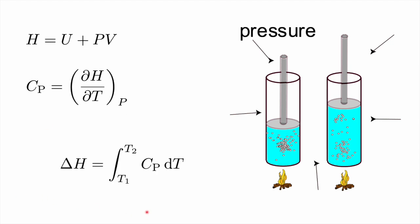If a substance does not undergo phase transformations over the temperature range T1 to T2, the change in enthalpy between T1 and T2 is simply the integral of the heat capacity at constant pressure dT over that temperature range. That will be the amount of enthalpy change when we heat the material from T1 to T2. Heat capacity is something we can measure fairly easily using, for example, calorimetry — which is part of your practical class.